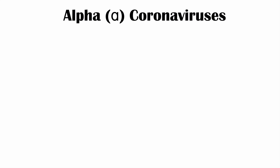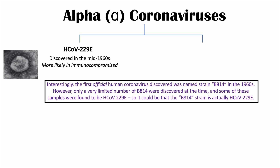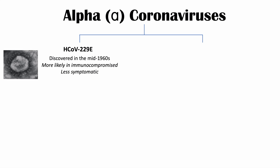We're going to first talk about the alpha coronaviruses. There are two alpha coronaviruses that cause illness in humans. The first one is HCoV-229E, which was discovered in the mid-1960s. This coronavirus is more likely to infect immunocompromised patients and is less symptomatic or less severe than other coronaviruses, so this one is less likely to present clinically.